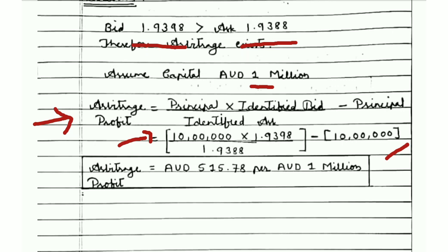When you solve this on a calculator, the final answer is AUD 515.78 per AUD 1 million. We write it clearly as Australian Dollar 515.78 per AUD 1 million. The interpretation is: if you invest 1 million Australian Dollars in the arbitrage of this AUD/USD currency pair, you can make a profit of AUD 515.78.